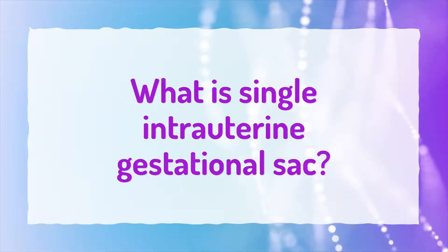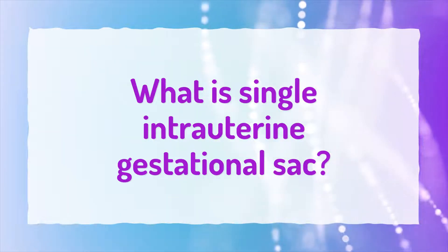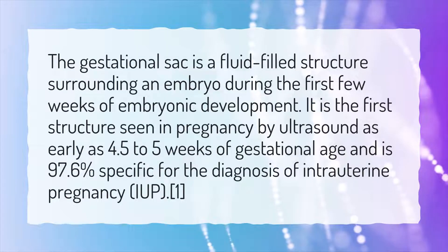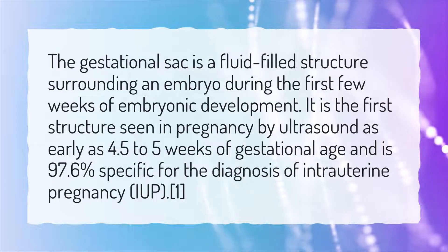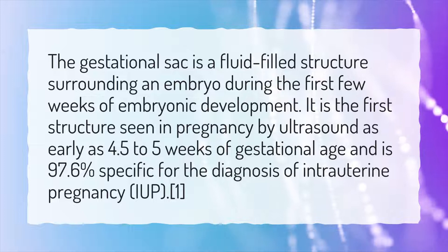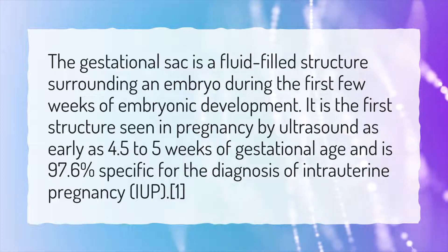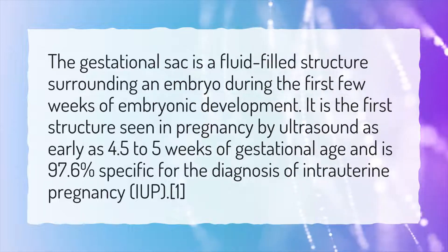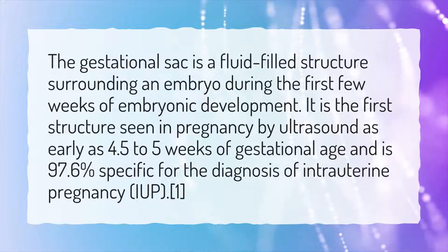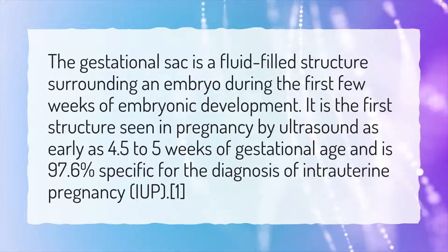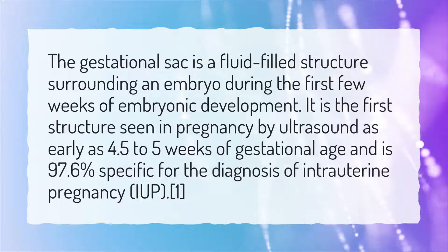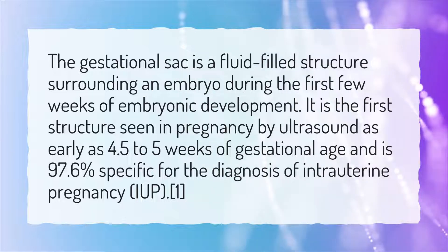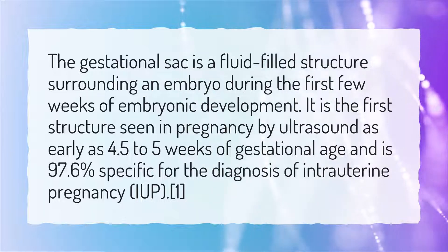What is a single intrauterine gestational sac? The gestational sac is a fluid-filled structure surrounding an embryo during the first few weeks of embryonic development. It is the first structure seen in pregnancy by ultrasound, as early as 4.5–5 weeks of gestational age, and is 97.6% specific for the diagnosis of intrauterine pregnancy (IUP).